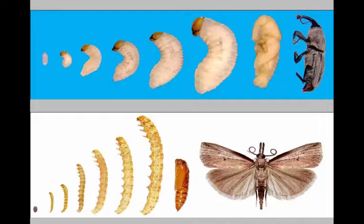Below that is a sod webworm — the large sod webworm — showing an egg and six larval instars. Since there are six larval instars, I know that's a female. In many Lepidoptera, males have five larval instars and females have six. If you're going to produce eggs, you need a bigger, more robust body — going through an extra instar allows you to build up the fat bodies and body mass needed to produce eggs as an adult.